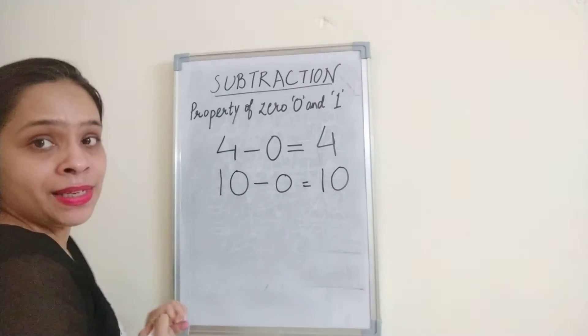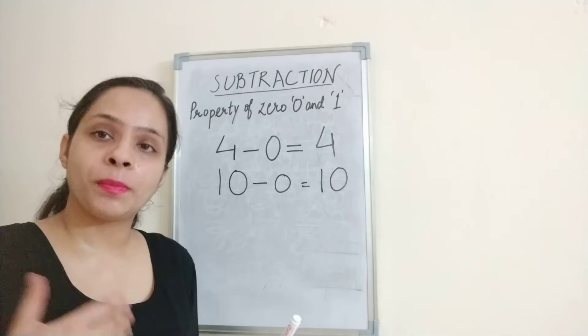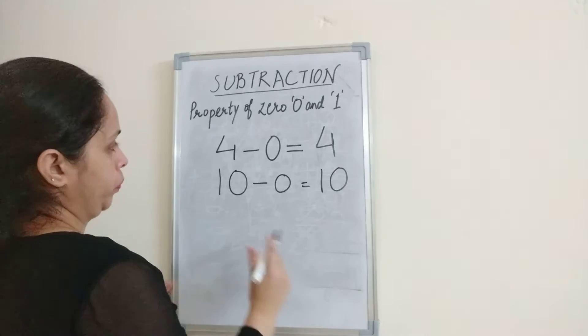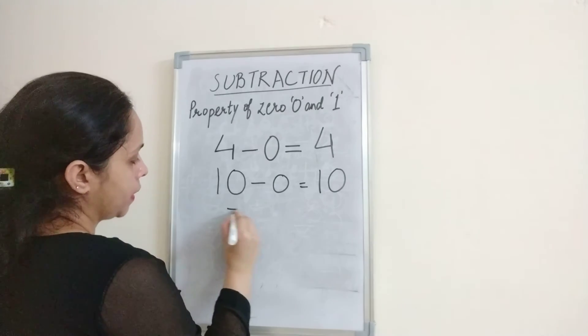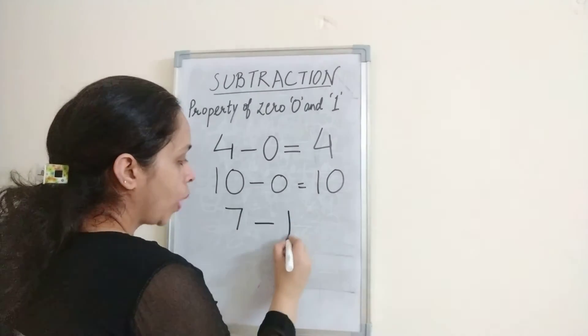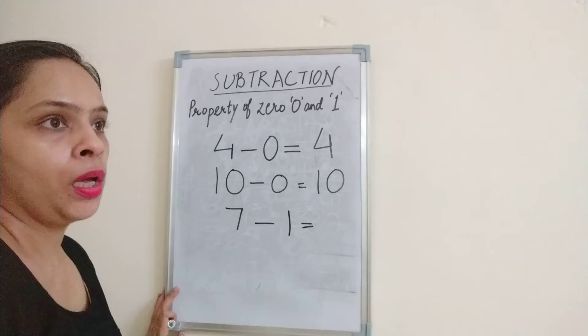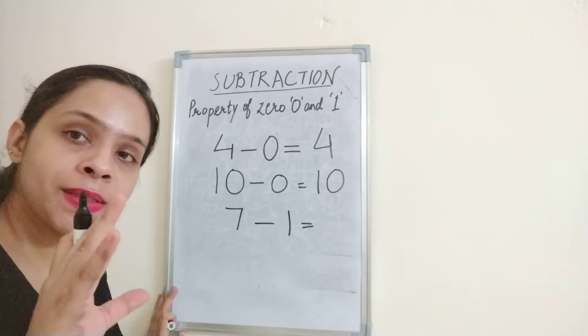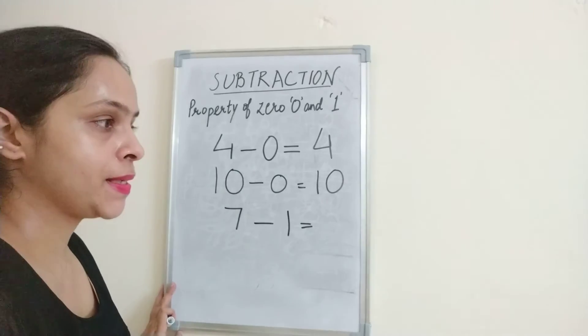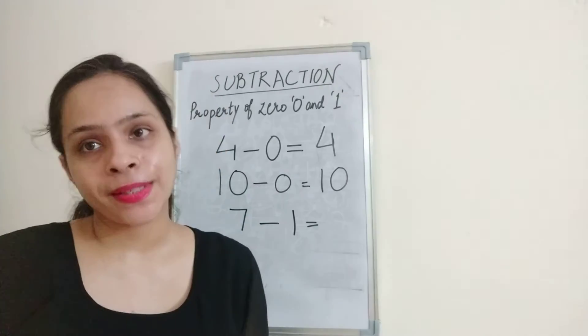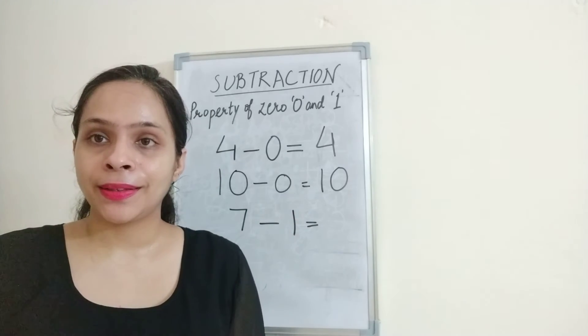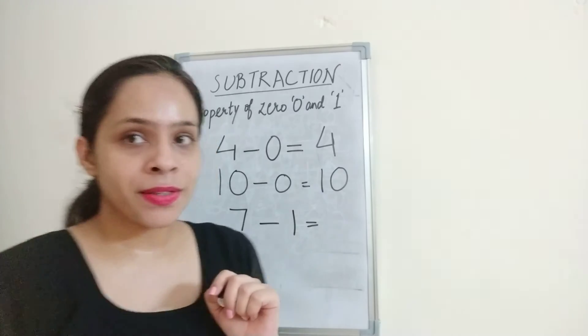Now, this is our other property, the property of subtracting 1. So, this number is 7. So if we have 7 minus 1, you have 7 pencils, right? 7 pencils, and you gave one pencil to your friend. So you have how many pencils? Look at the picture.